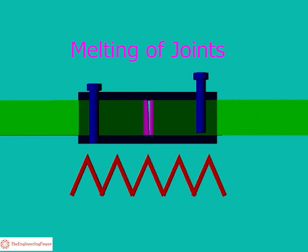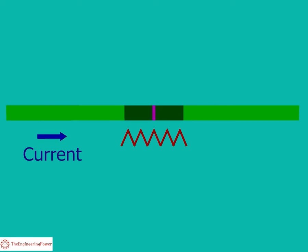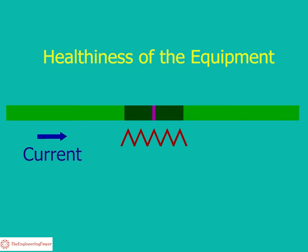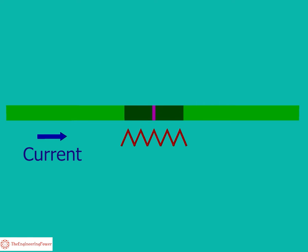It often causes a melting of the joints resulting in permanent fault. The contact resistance test needs to be carried out after a specific time to check the healthiness of the equipment like circuit breaker, bus bar joints, etc.